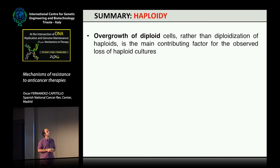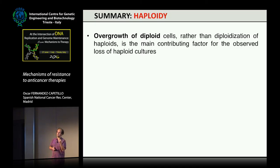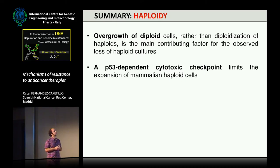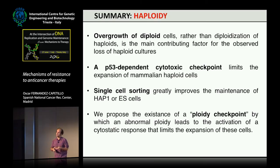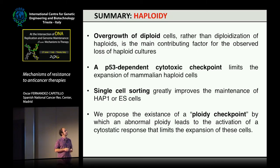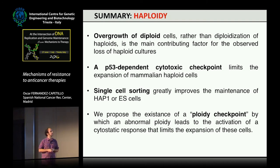The summary of the second part: what we call deploidization is probably not happening — the problem we face when trying to do genetic screenings is overgrowth of diploids, which grow better than haploids. There may be some genuine diploidization events at the single-cell level, but that's not the main issue. There is a P53-dependent cytotoxic checkpoint that limits the expansion of mammalian haploid cells. Single-cell sorting helps maintain haploidy. We propose this is probably the same mechanism operating in the tetraploidy checkpoint — a general ploidy checkpoint where abnormal ploidy content activates P53 and limits cell expansion.